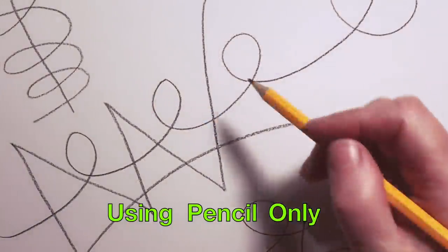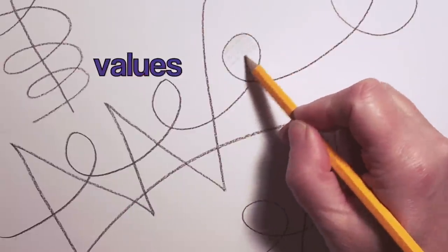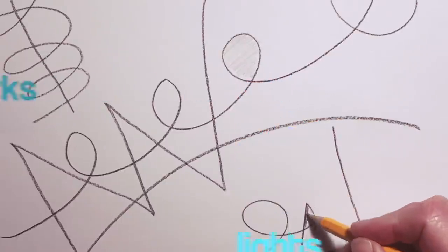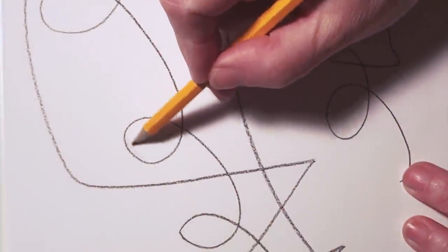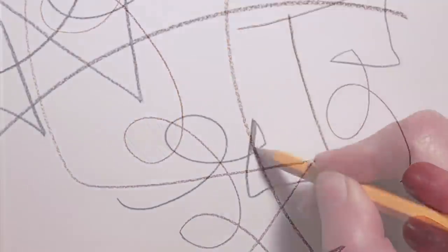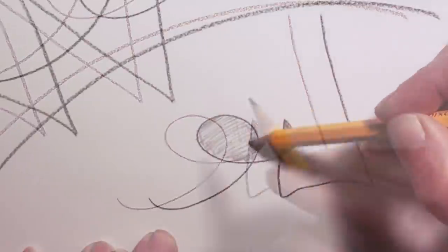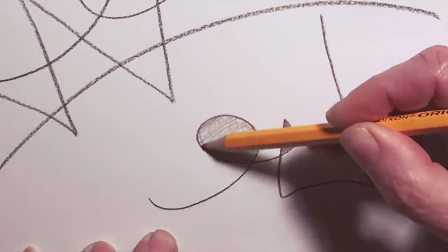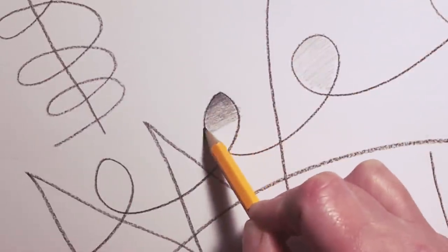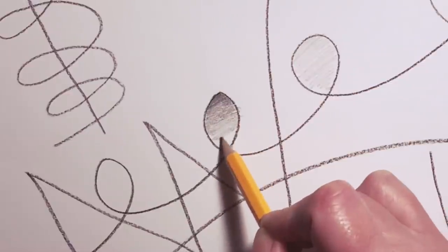If you are using pencil only, you can create variety by using different values. And what I mean by value is darks and lights. I can color this shape in light. I can color in this shape dark. I can color this shape in medium. I can color this shape as a gradient where it goes from dark on one end to light on the other.